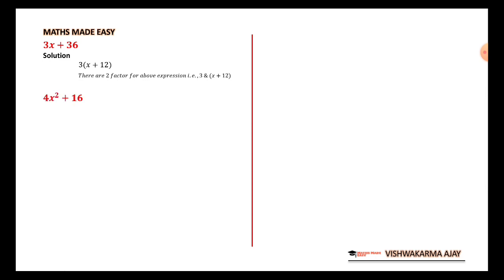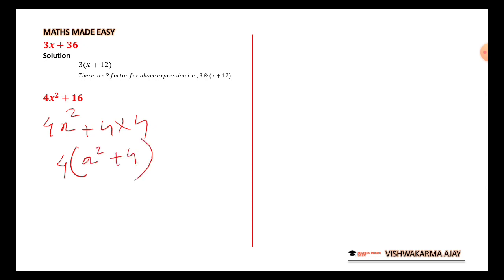Next: 4x² + 16. Again a similar kind of question. You can write this as 4x² + 4×4. Taking 4 as a common factor gives 4(x² + 4). So the two factors are 4 and (x² + 4).